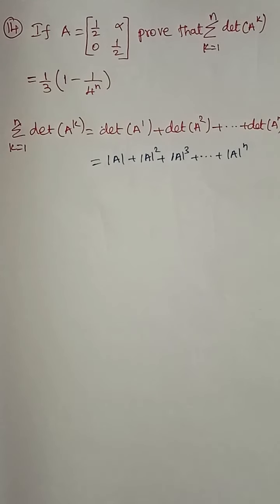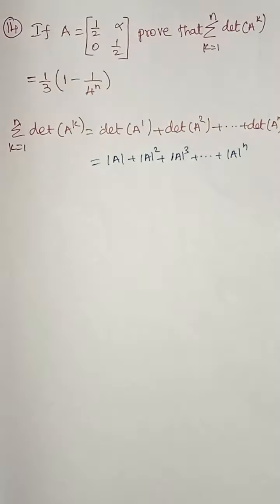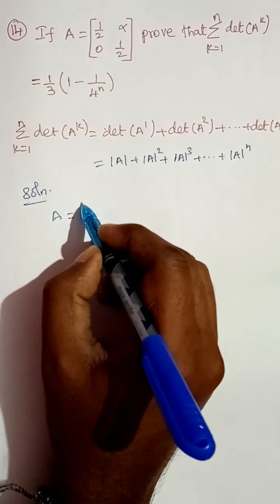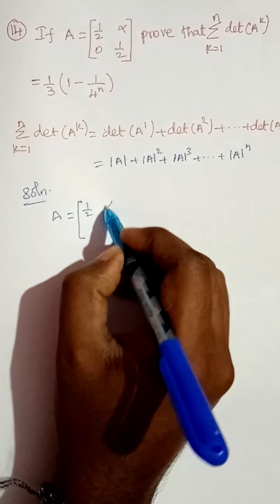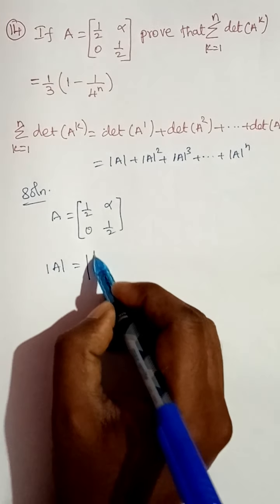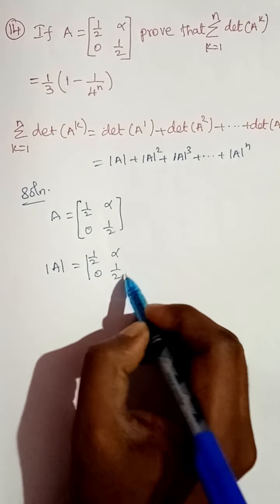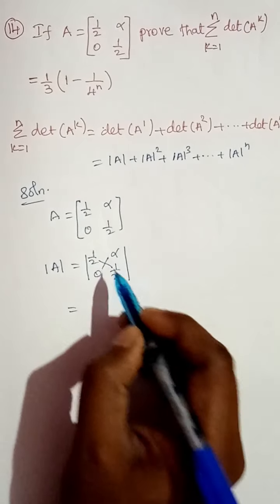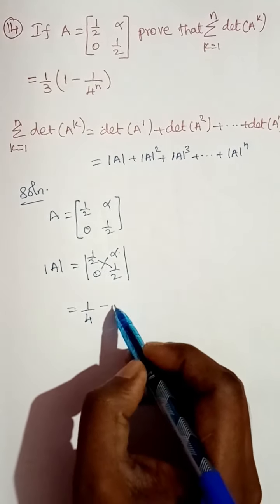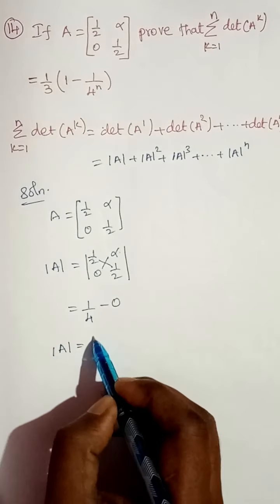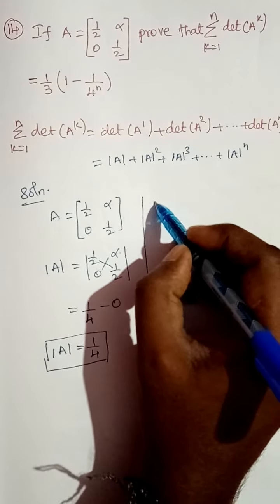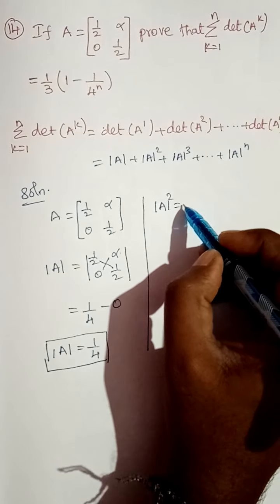Now I'm going to find out this value first. A is equal to the matrix [[1/2, α], [0, 1/2]]. So find determinant of A: determinant of [[1/2, α], [0, 1/2]]. The two diagonal terms give 1/2 times 1/2, which is 1/4, minus 0 times α which is 0. So determinant of A is equal to 1/4.